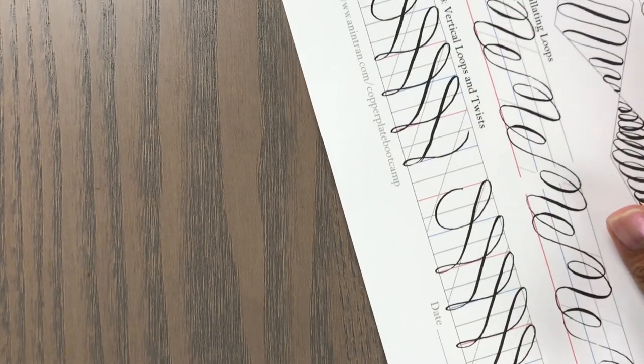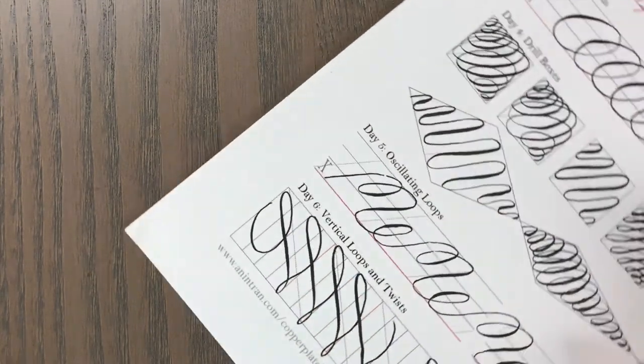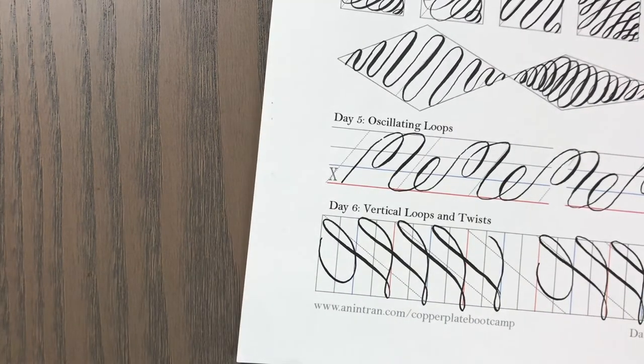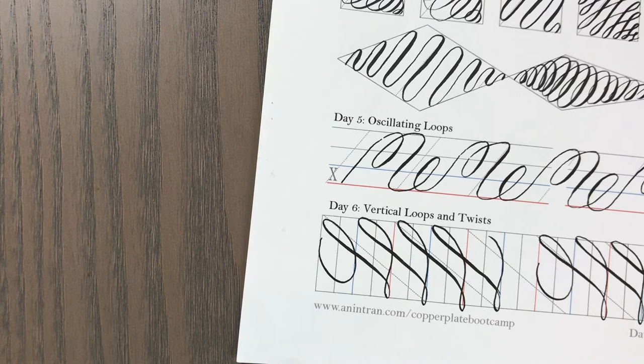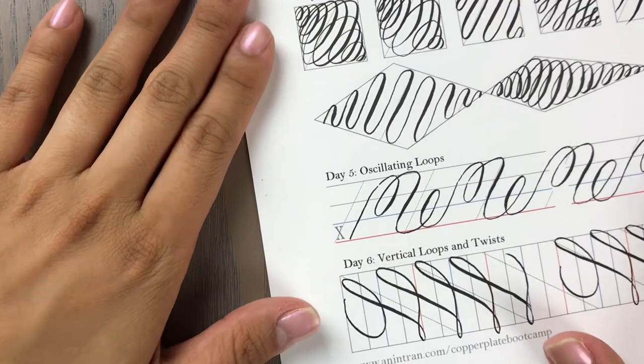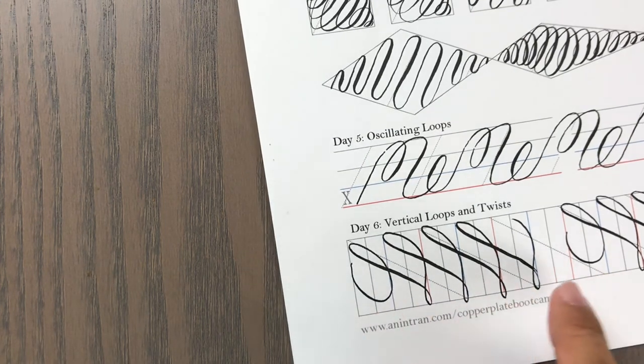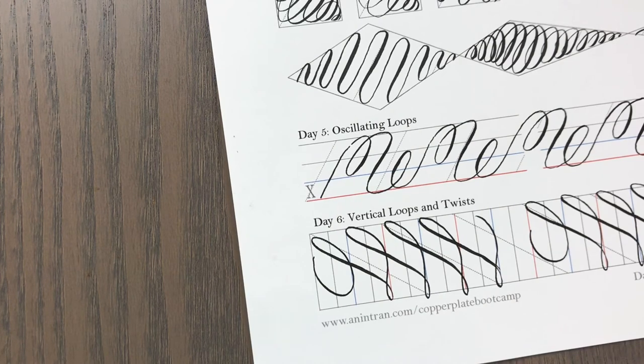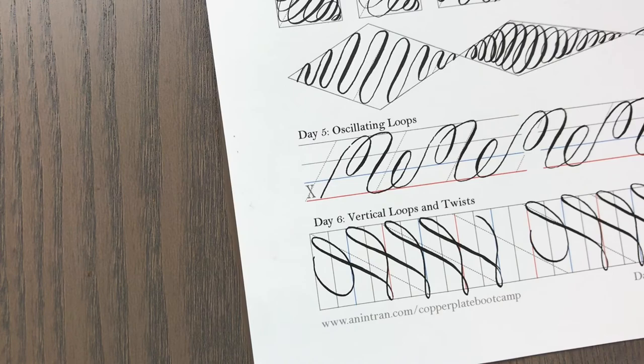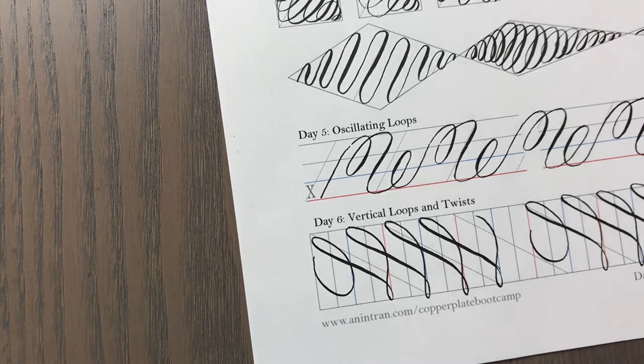Okay, and there you have it—day six, vertical loops and twists. I hope you enjoyed that last practice drill before we have day seven where we do our whole alphabet. As always, let me know down below if you're loving this bootcamp, how you're doing so far. We're almost done. Let me know if you have any questions or concerns with this drill.